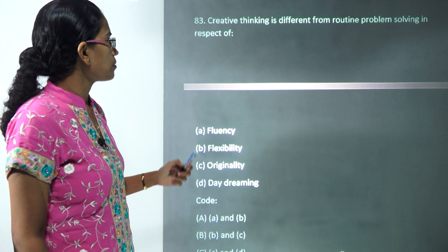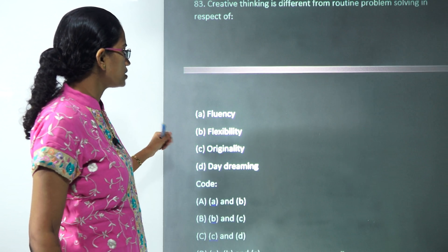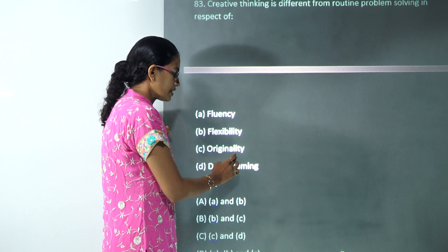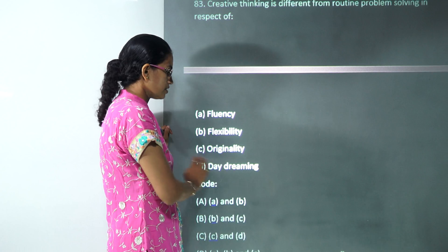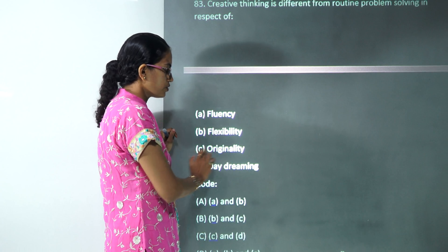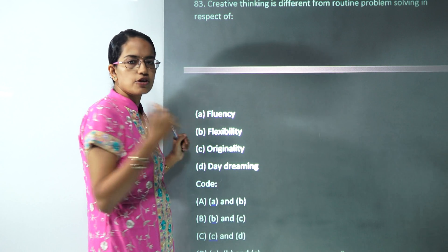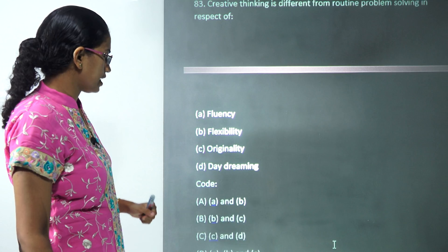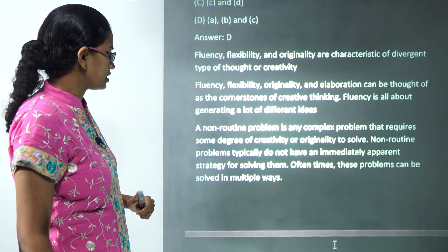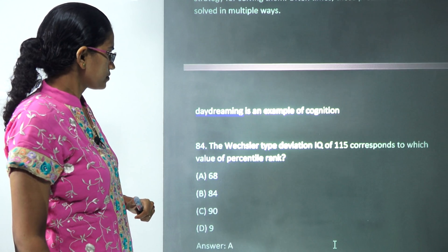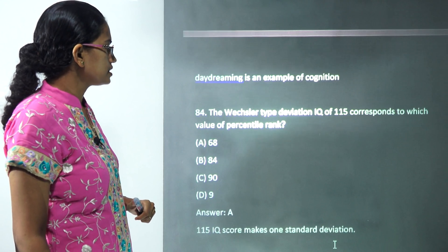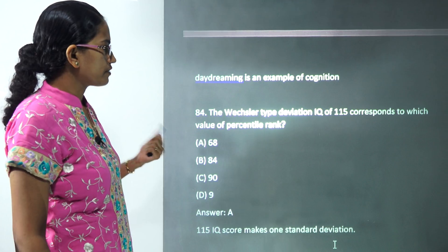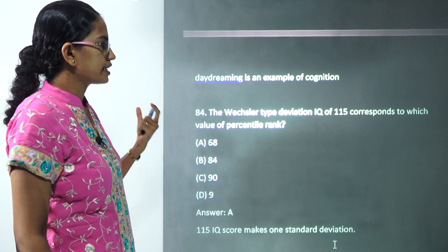The next question states that creative thinking is different from routine problem solving because it involves fluency, flexibility, and originality. All three are part of creative thinking, so A, B, and C are the correct answers.